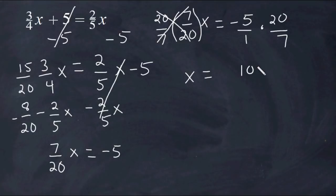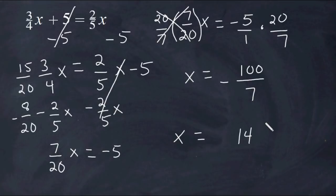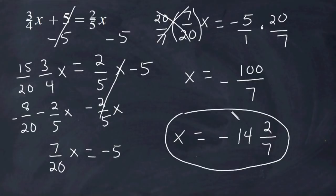5 times 20 is 100, and for the denominator, 1 times 7 is 7. Because this value is negative and this value is positive, our result is going to be negative, since a negative times a positive always yields a negative. Now we rename this improper fraction as a mixed number. 7 fits into 100 14 times. 14 times 7 is 98, and 98 is 2 away from 100. So 2 will become our numerator and the denominator stays as 7. We cannot forget the negative, so x is equal to negative 14 and 2 sevenths.